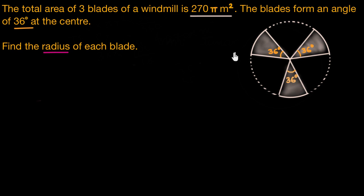The blades of a windmill move in a circular fashion, so we can say that each of these blades is actually a sector. It forms a sector of this circle. If we find out the radius of the sector, we'll be able to figure out the radius of each of these blades.